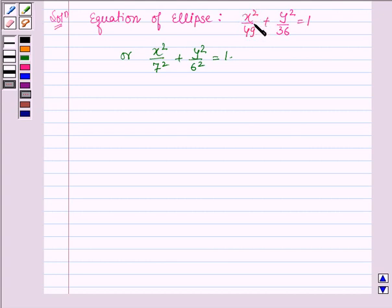Here, as we can see, the denominator of x²/49 is greater than the denominator of y²/36. Thus, the major axis is along the x-axis.